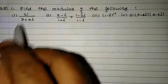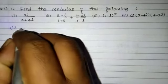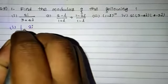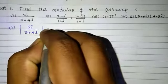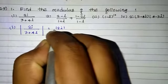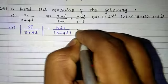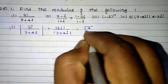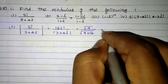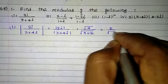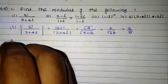Exercise 2.5, First sum. Find the modulus of the following. First one: modulus of 2i divided by (3 plus 4i) equals modulus of 2i divided by modulus of (3 plus 4i). So, root of real part squared plus imaginary part squared gives root 4 divided by root of 9 plus 16, equal to 2 divided by root 25, equal to 2 by 5.